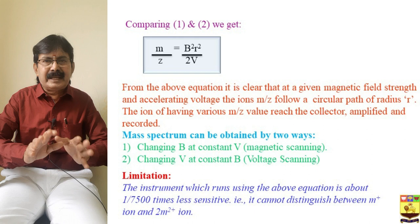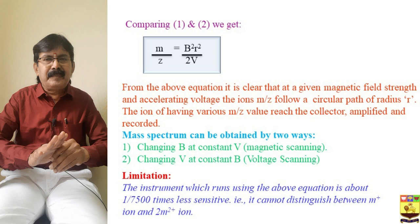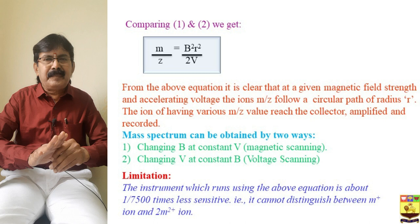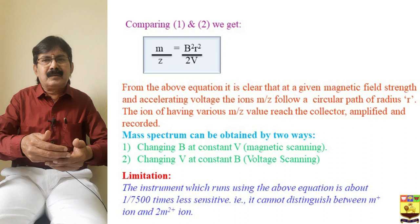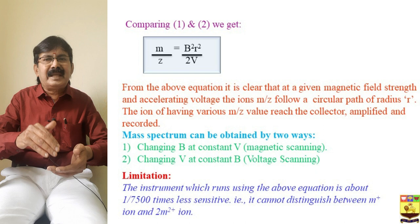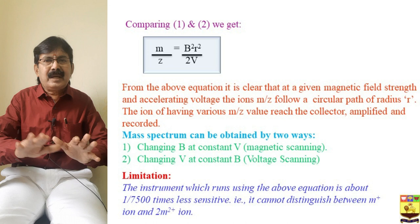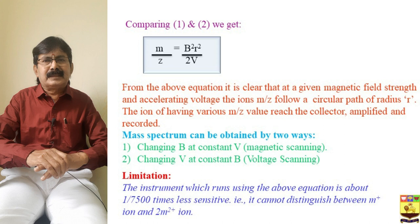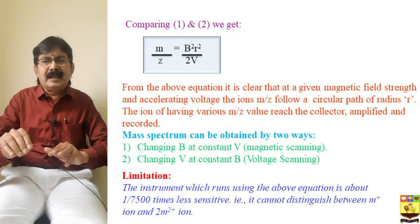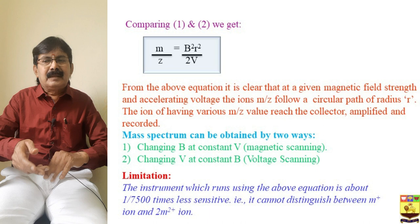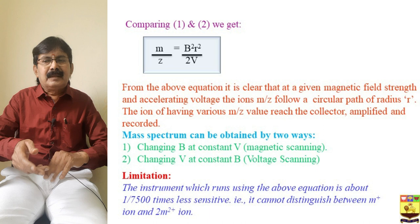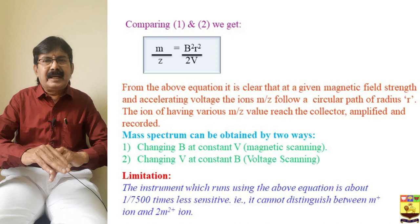From the above equation it is clear that at a given magnetic field strength and accelerating voltage, the ions of a particular m/z follow a circular path. Ions of various m/z values are separated, detected, amplified, and recorded. The mass spectrum can be obtained in two ways: first by magnetic scanning — changing the magnetic field while keeping the voltage constant — and second by voltage scanning, keeping the magnetic field constant.